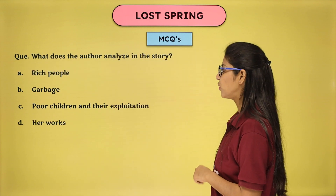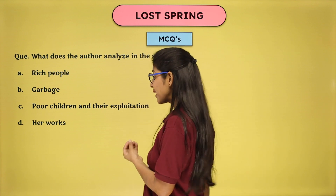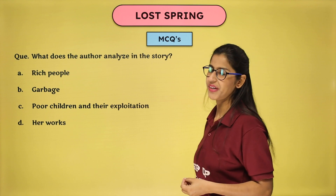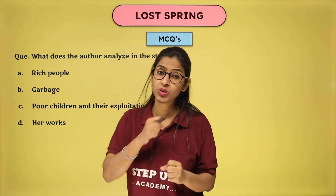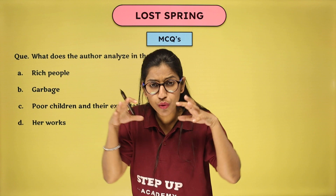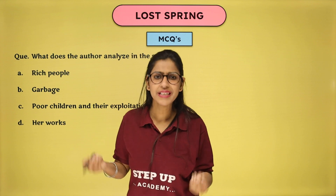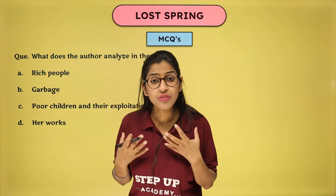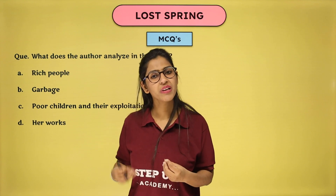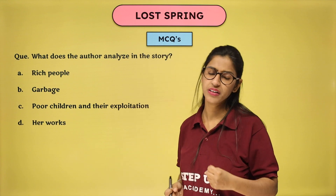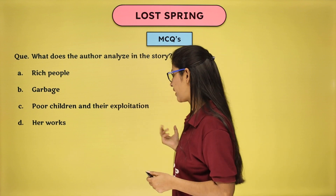What does the author analyze in the story? Does she analyze rich people, garbage, poor children and their exploitation? The answer is: poor children and their exploitation. How poor children are exploited, how they face shoshan (oppression), how they are forced to live in huts where there is no proper ventilation, no proper drainage system, no clean drinking water — this is the lifestyle of these children and how they fight to survive, to live, to exist.